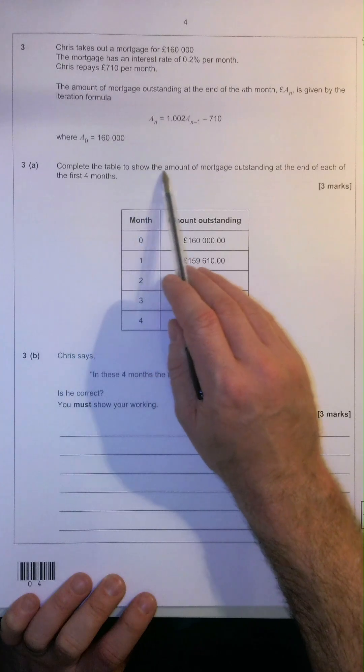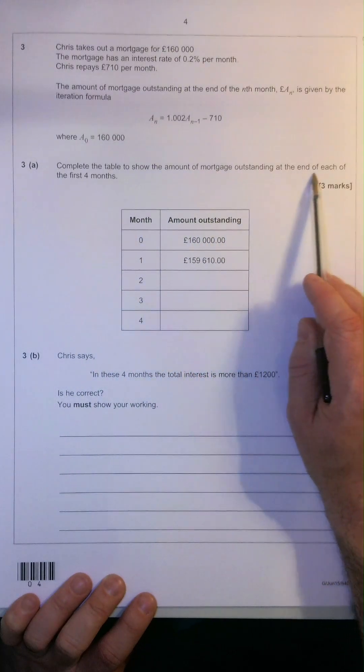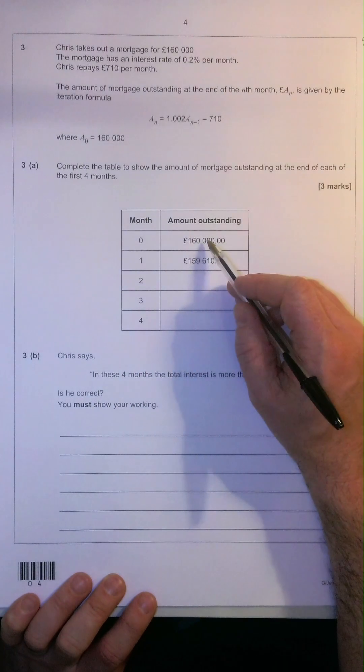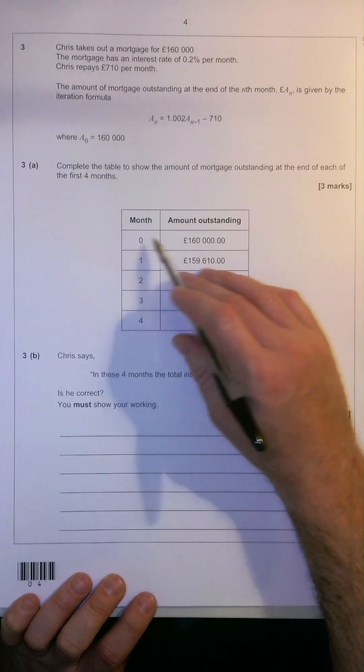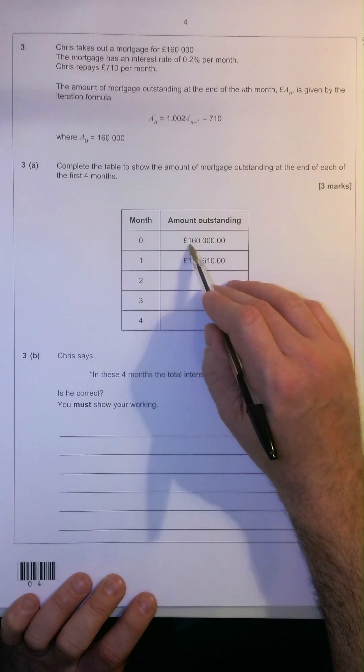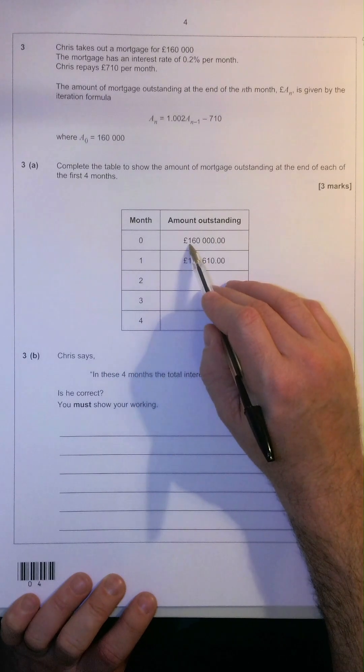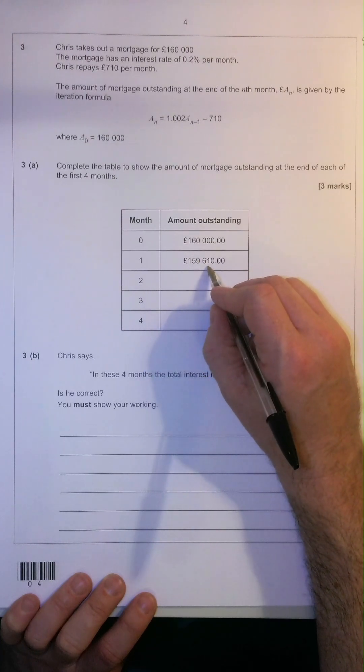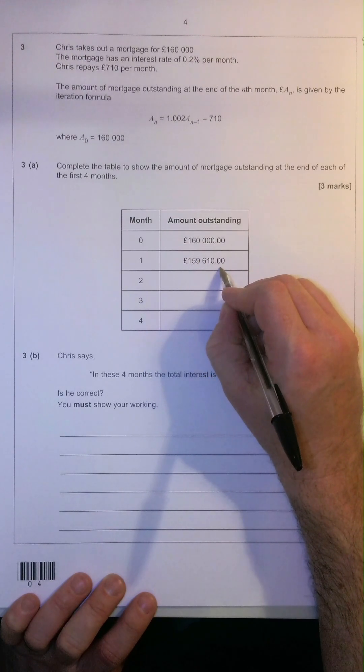Complete a table to show the amount of mortgage outstanding at the end of each of the first four months. So we can see, in order to get the second month, well, zero to first, he's taken the $160,000, and he's got $159,610 amount outstanding.